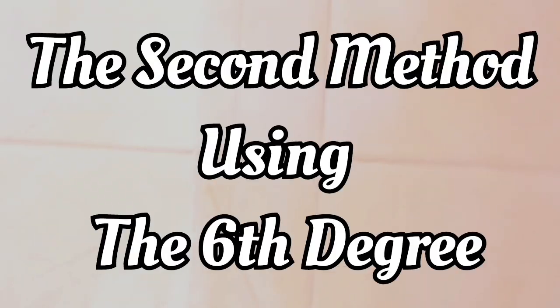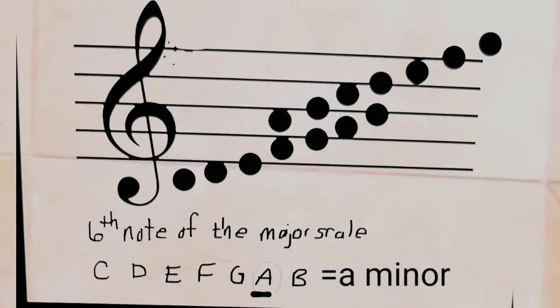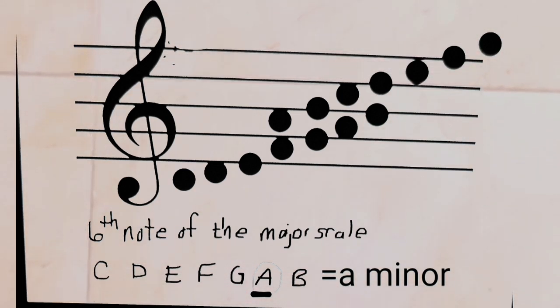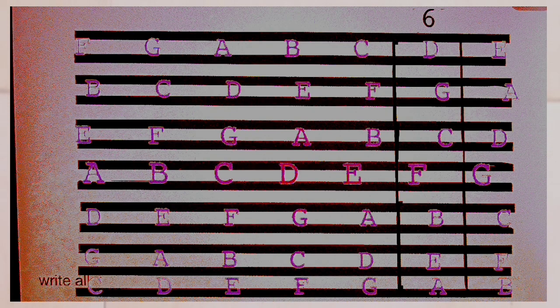Here's the second method using the sixth degree, and it's really easy. All you have to do is write out your letter scale, and the sixth note is always going to be your relative minor. It's as simple as that — write out the letters and count to the sixth note. Here is a sample showing that the sixth degree can be seen vertically on this chart.